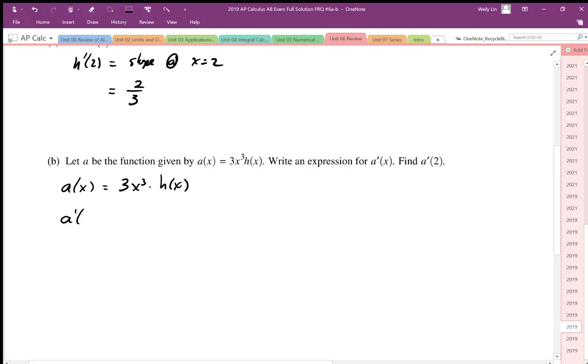So we're starting with a(x) equals 3x³ times h(x). So a prime of x is going to equal, well I'm going to have a product of two functions. So I'm going to differentiate the first function and leave h(x) like that, plus leave that alone and then find the derivative h prime.